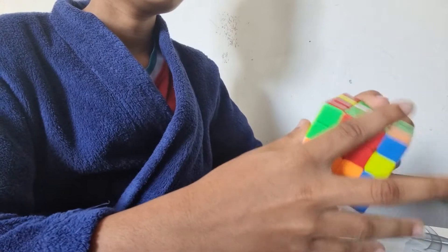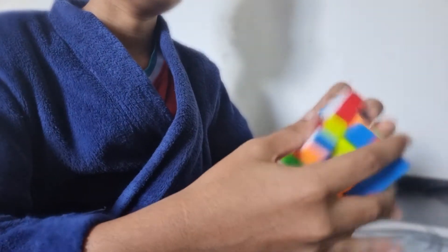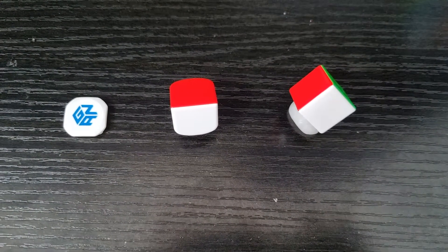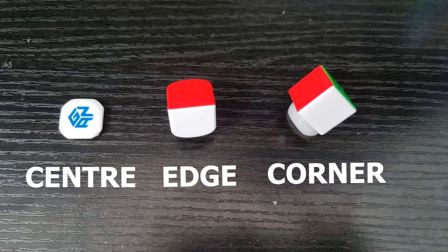Before we begin learning how to solve it, it is important to be able to recognize the pieces of a cube. A standard 3x3 Rubik's Cube has three different pieces: the center, the edge, and the corner.